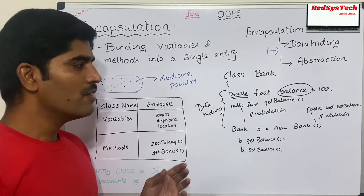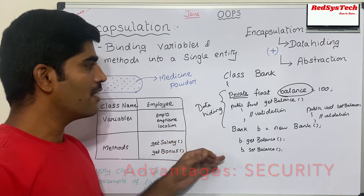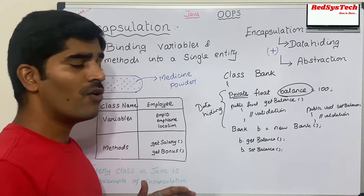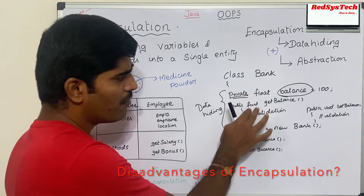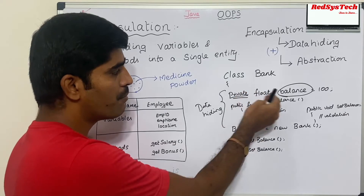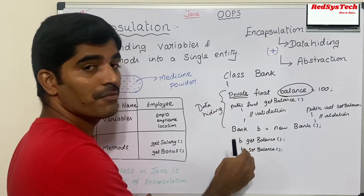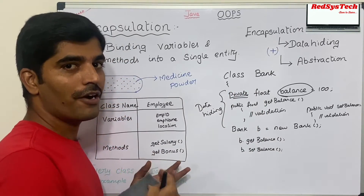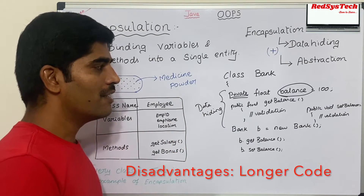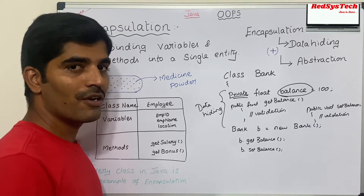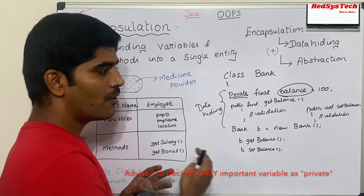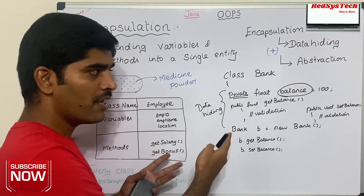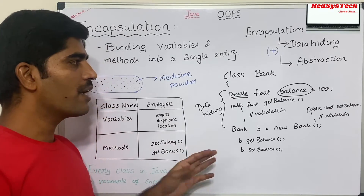The main advantage of encapsulation is data security. Also, if you want to enhance your code you can do so without impacting external users. The disadvantage is that if you have four or five variables and you make them all private, you need to write getter and setter methods for each one, which increases execution time and makes the code longer. However, it is always advisable to make variables private so that only authorized users can access them. If a variable doesn't need to be secured, you can make it public without encapsulation.